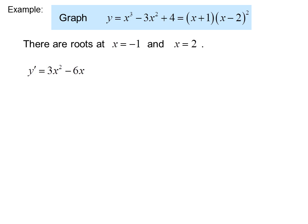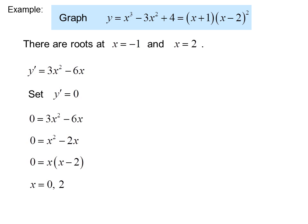Looking at the first derivative, y prime equals 3x squared minus 6x. Setting y prime equal to 0, we can factor out a 3 and then an x, giving us x equals 0 or x equals 2. That tells us there are possible extremes at x equals 0 and x equals 2.